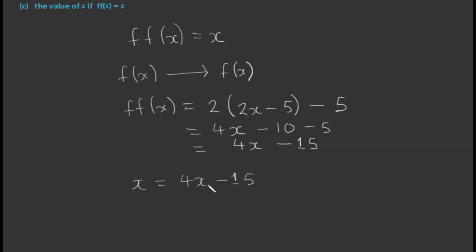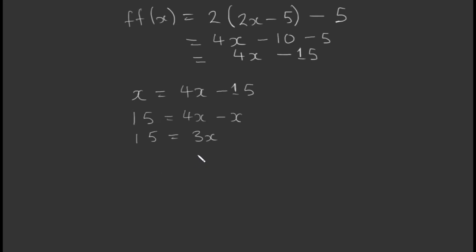Taking x to the left side gives 4x − x = 15, so 3x = 15. We divide both sides by 3 — the 3s cancel — leaving x = 15 / 3 = 5. So we have found the value of x, which is 5.